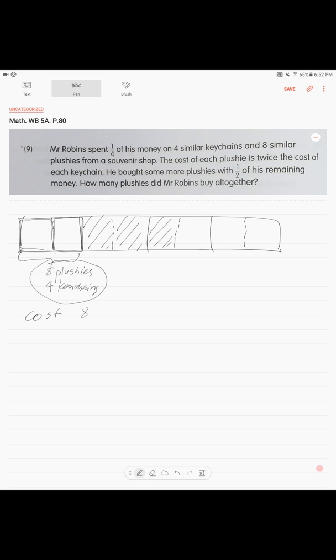So if cost of a plushie is twice the cost of the keychain, it means the cost of eight plushies is the cost of, twice, 16 keychains.